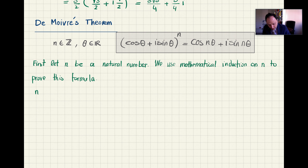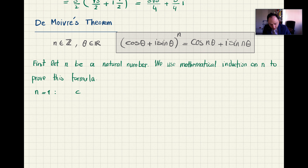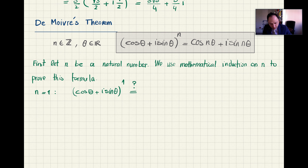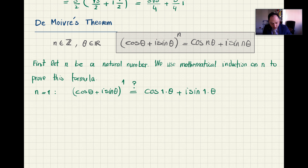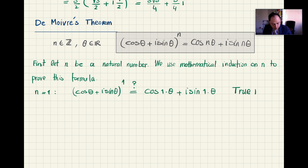First, let n be a natural number. We use mathematical induction on n to prove this formula. The first thing to check manually is the base case n equals 1. If I put n equal to 1, the left side becomes the expression to power 1, and the right side becomes cosine(1·θ) plus i sine(1·θ). Clearly this holds, so the base case is true.